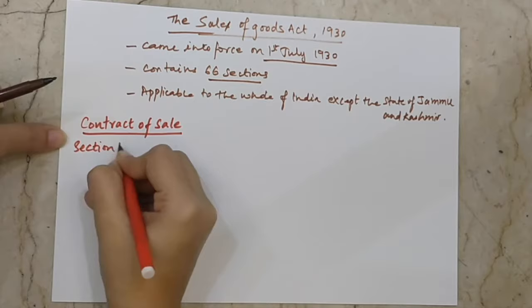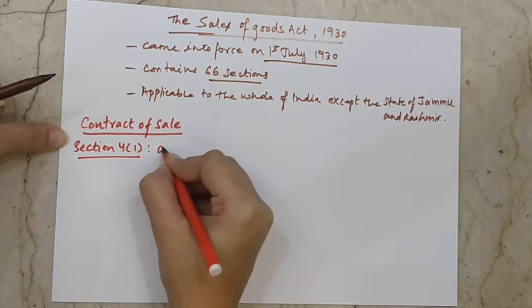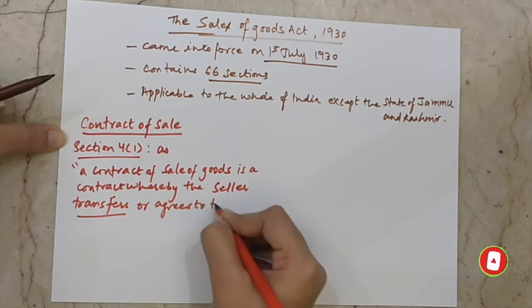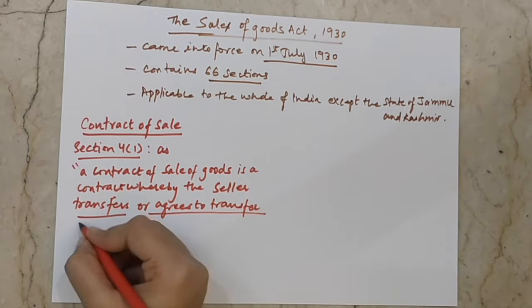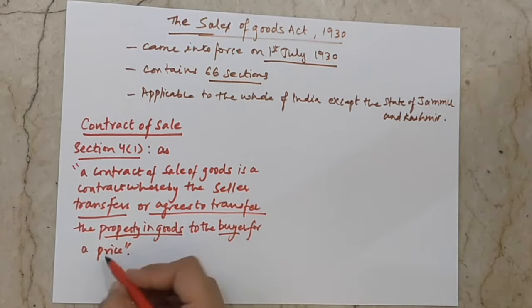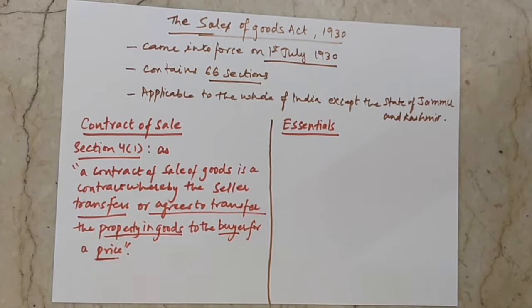The definition of sale is defined in Section 4.1. A contract of sale of goods is a contract whereby the seller transfers or agrees to transfer the property in goods to the buyer for a price. So the property in goods is transferred or agreed to be transferred to the buyer for a price.